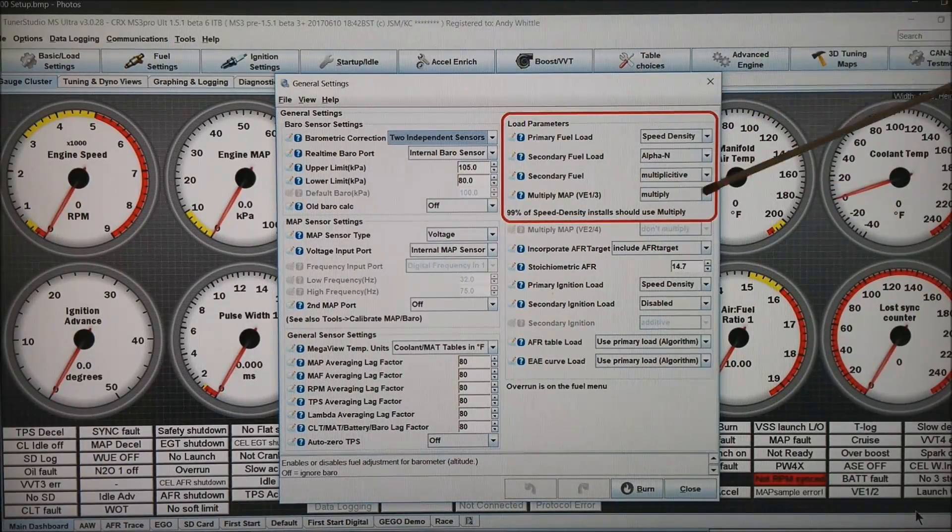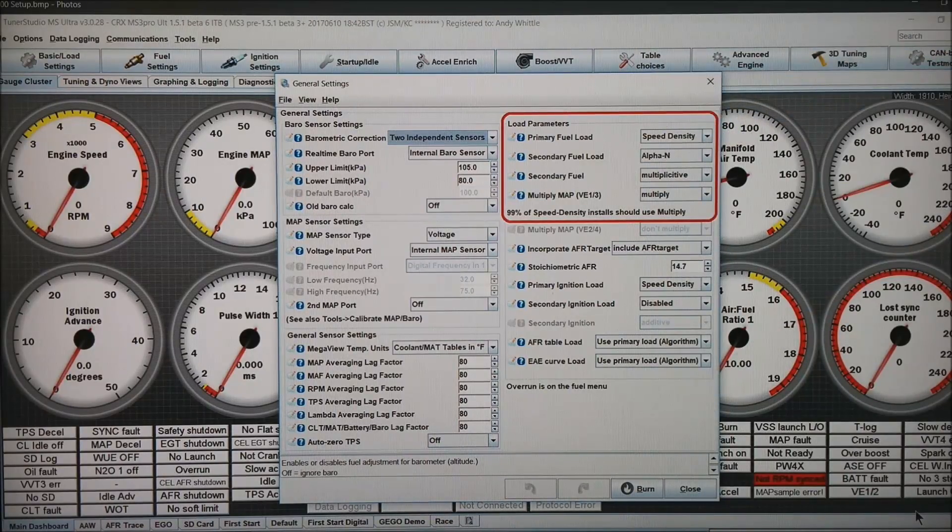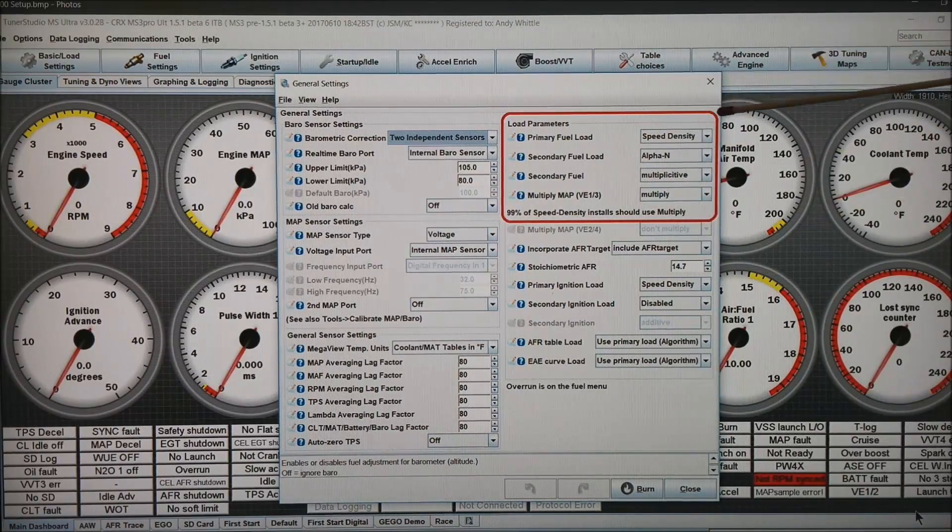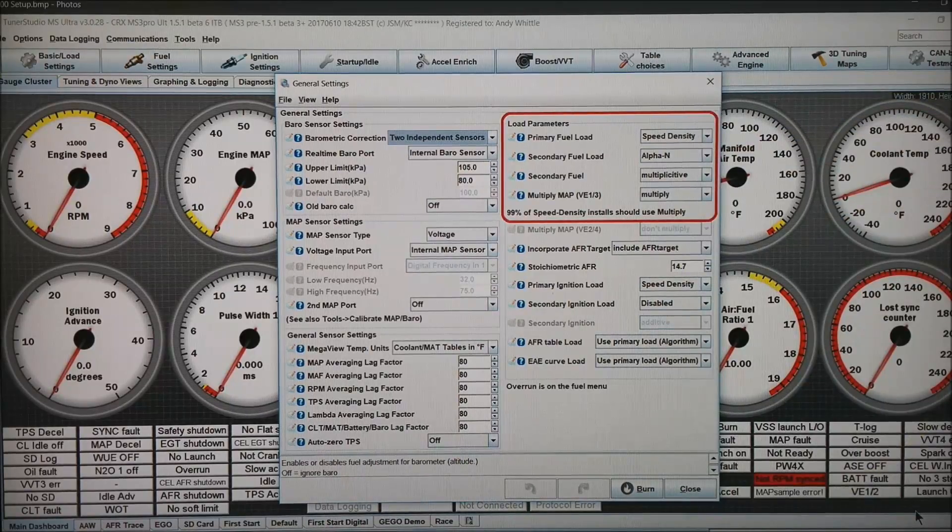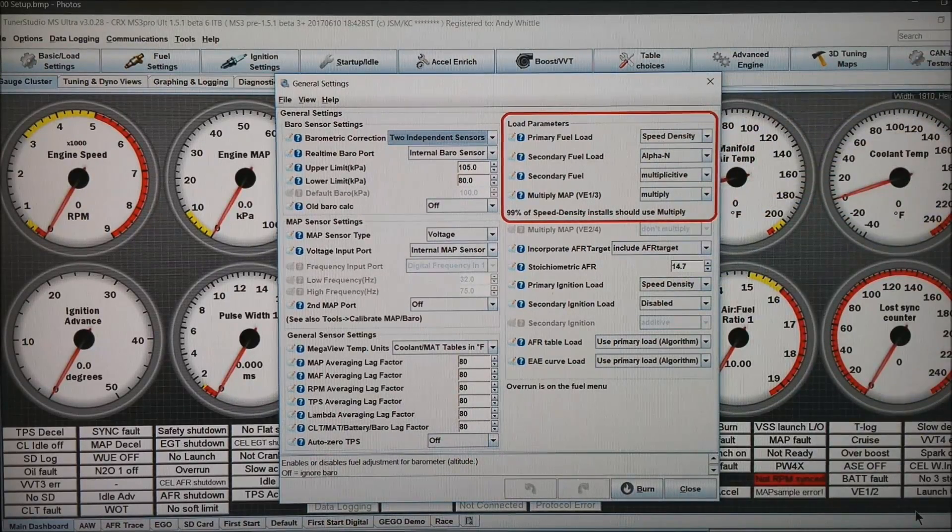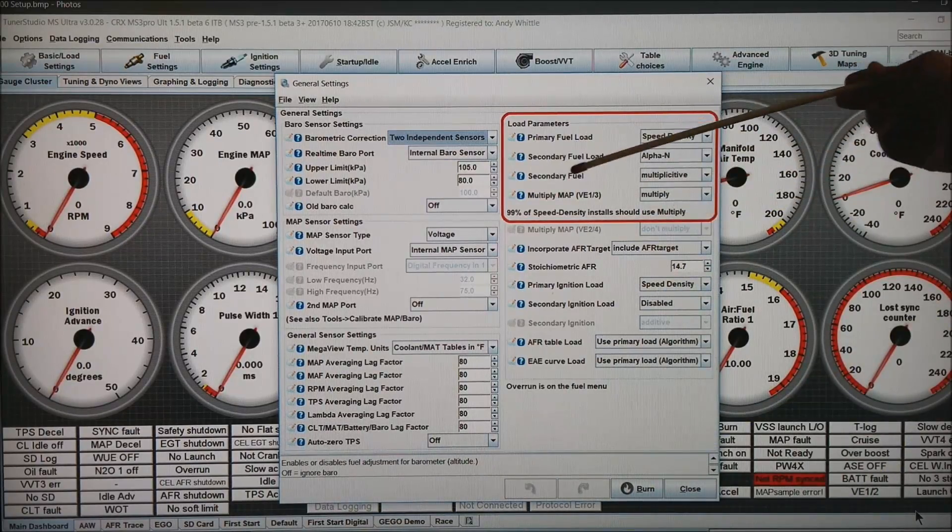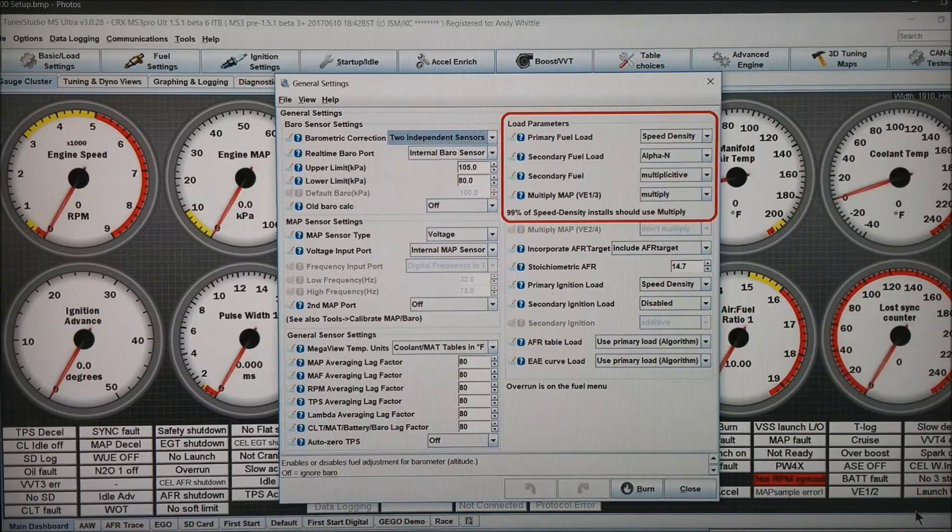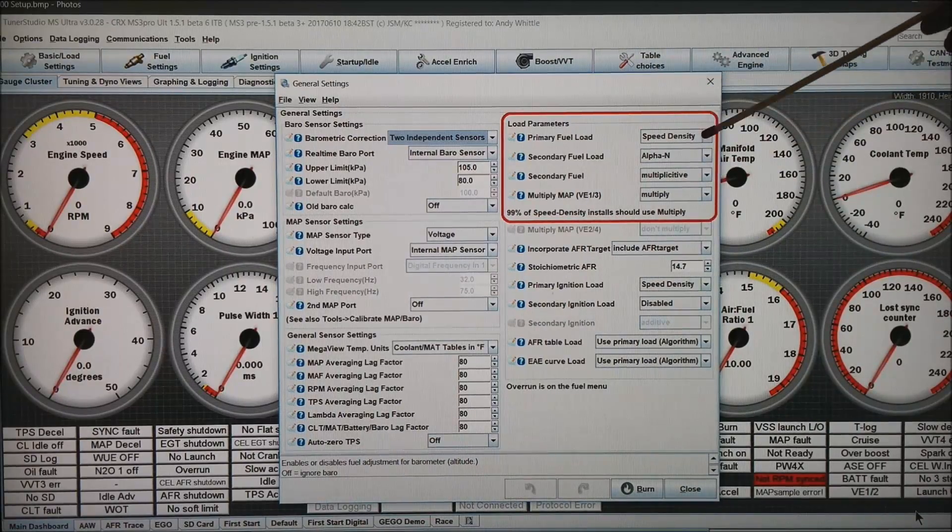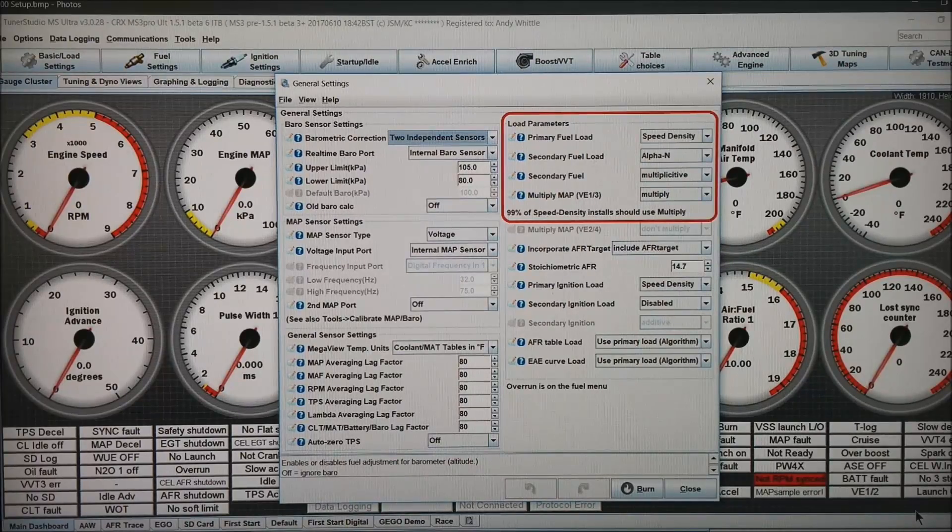The two things we do to set this up is under general settings load parameters. Because we tuned in speed density first, this will already be in speed density, but this one will probably be turned off. What I want to do is hit the tag down box and choose alpha n or possibly mass air flow. And then as a secondary fuel, I want it to be multiplicative, meaning the first one times the second one and multiply maps should be turned on in most installs.